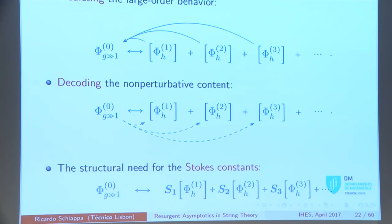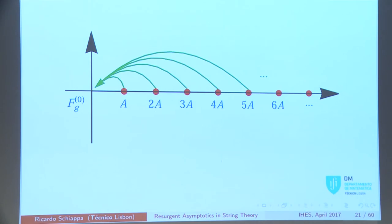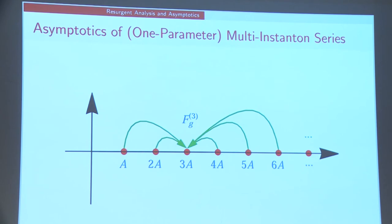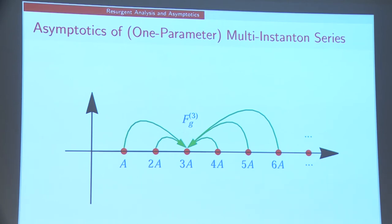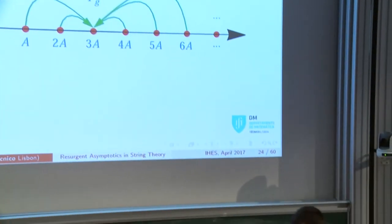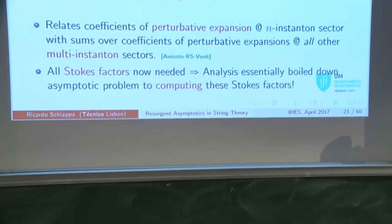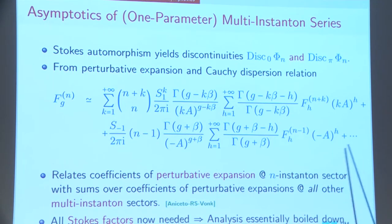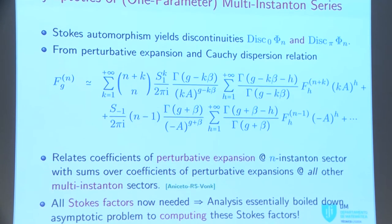There's a structural need for Stokes constants — in some cases we can only access them numerically, without an analytic first-principles way of computing them. This picture holds not only for the perturbative sector but for arbitrary multi-instanton sectors. For the forward directions there is a similar expression, but the backward directions involve a sum over partitions, and all Stokes constants appear. We can go to more complicated problems with more than one instanton action — instead of a chain with allowed motions, I have a lattice with more complicated allowed motions.